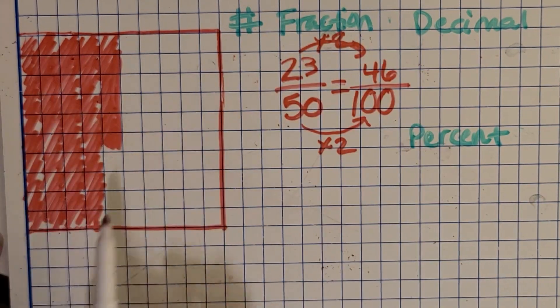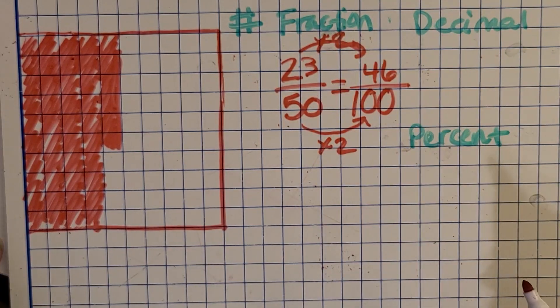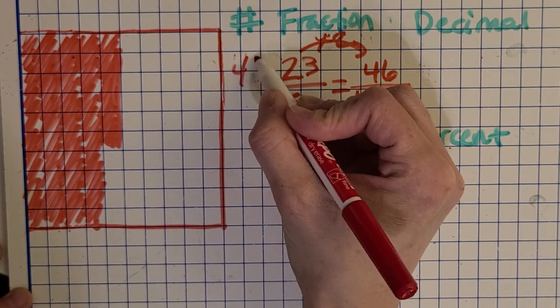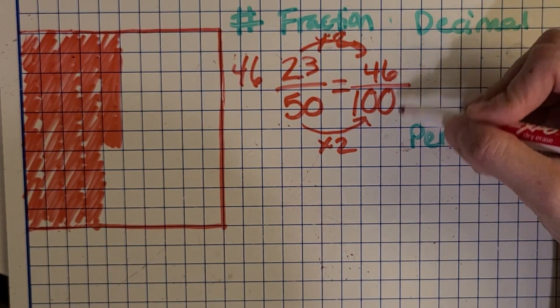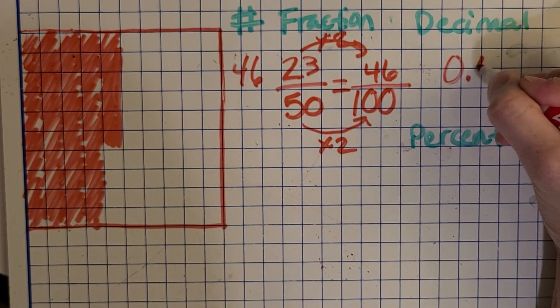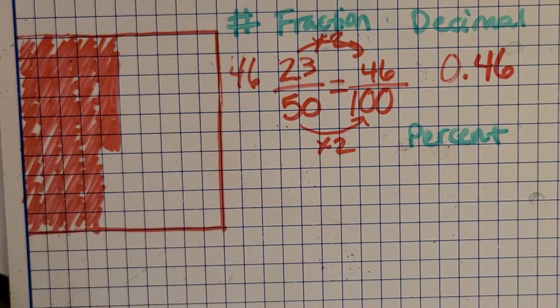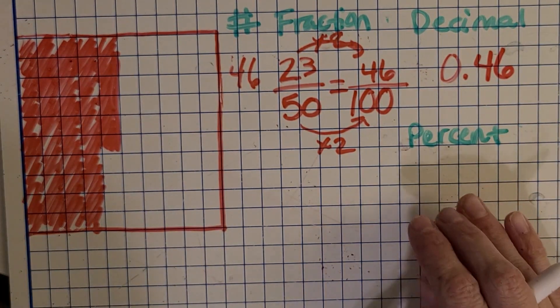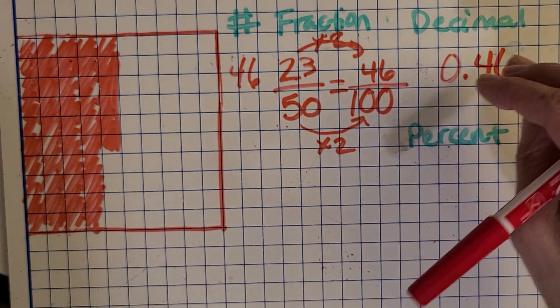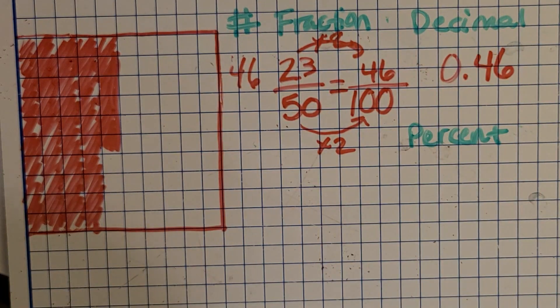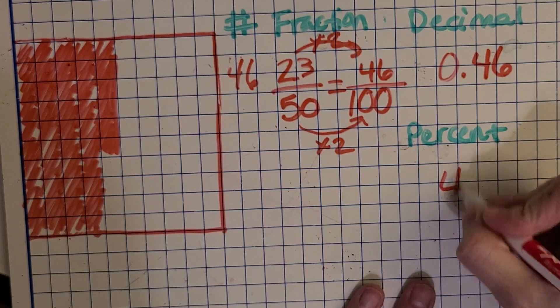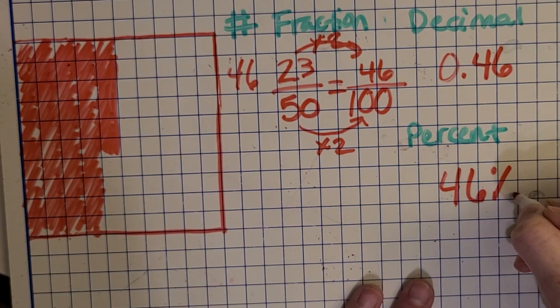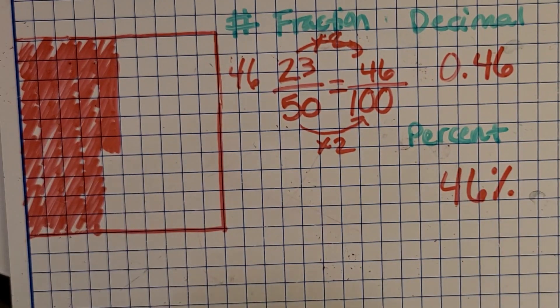All right, so let's check your work. I went ahead and shaded the 46. There's, of course, 46 are shaded. A decimal, I just say it out loud, 46 hundredths. And then I just write what I hear. And then the percent, remember, is related to the decimal and the fraction out of 100. So what percent of this grid is shaded? Yep, you're catching on quick. It's 46 percent. Great job.